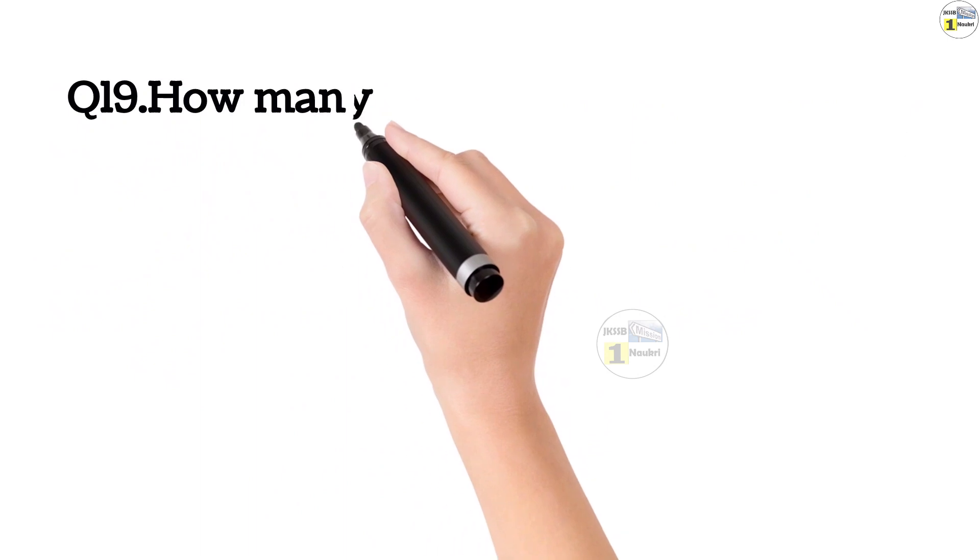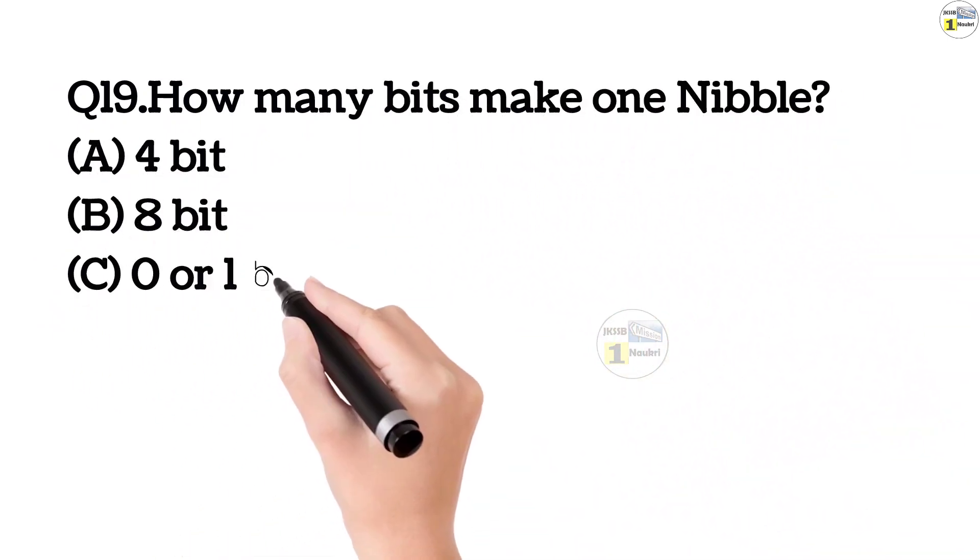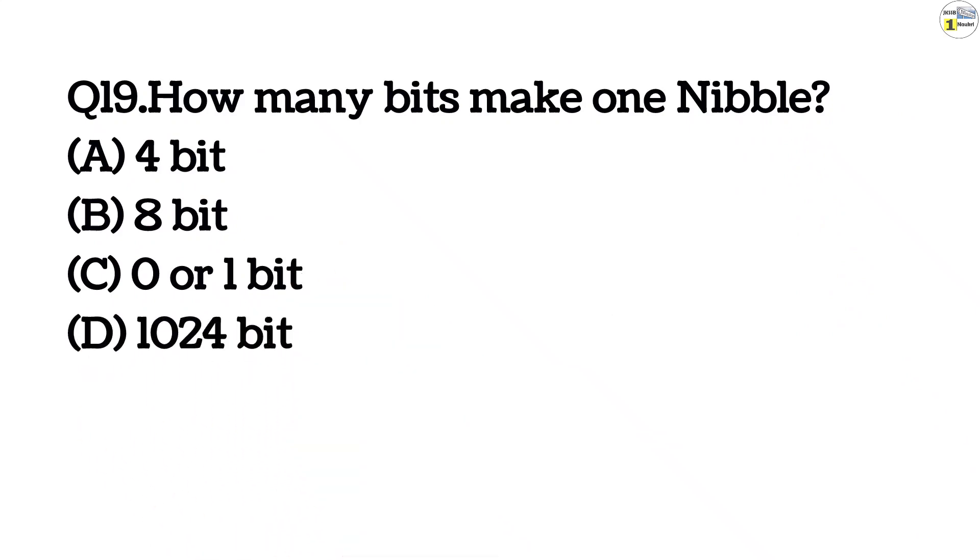Question number 19. How many bits make one nibble? Option A, 4 bits. Option B, 8 bits. Option C, 0 or 1 bits. Option D, 1024 bits. This answer is option A, 4 bits.